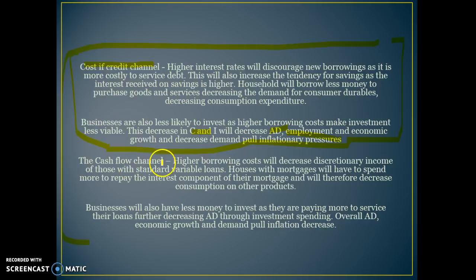In the cash flow channel, higher borrowing costs will decrease the discretionary income — an important term — of those with standard variable loans. Households with mortgages will have to spend more to repay the interest component of their mortgage and will decrease consumption on other products. Businesses also have less money to invest as they are paying more to service their existing loans. This will again decrease investment spending and overall reduce aggregate demand and demand-pull inflationary pressures.